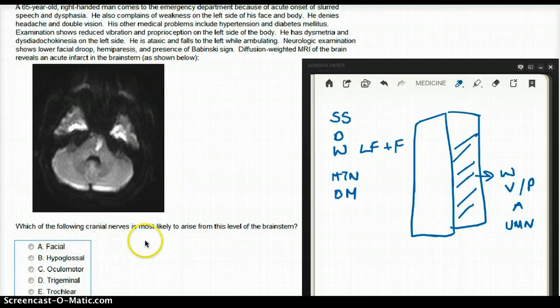Which of the following cranial nerves is most likely to arise from this level of the brainstem? From the diagram, we can also see that there are light areas here, here, and here.